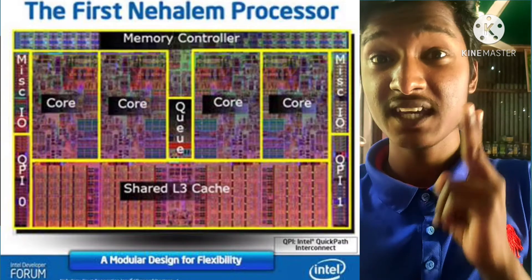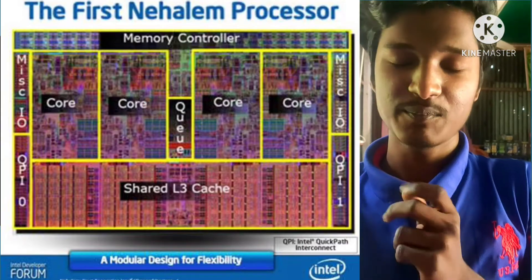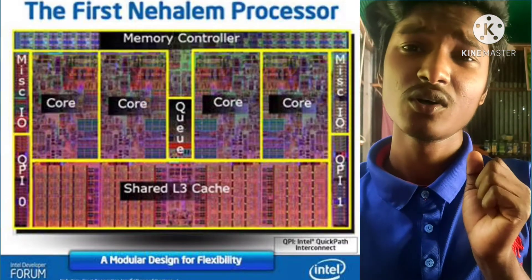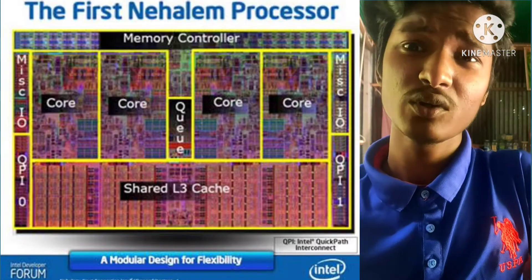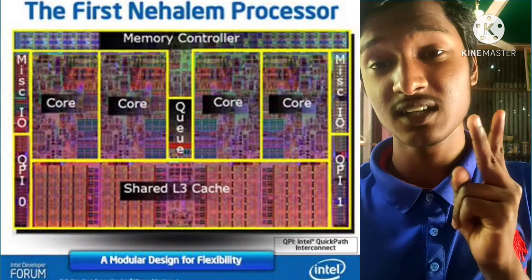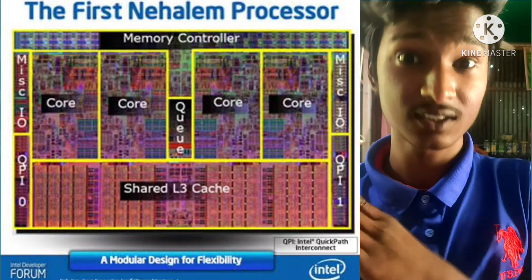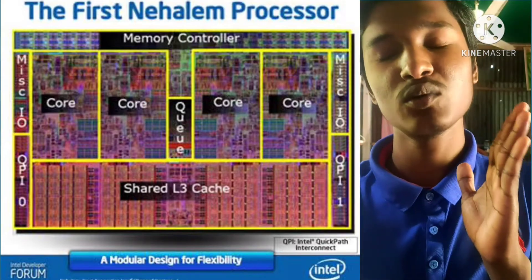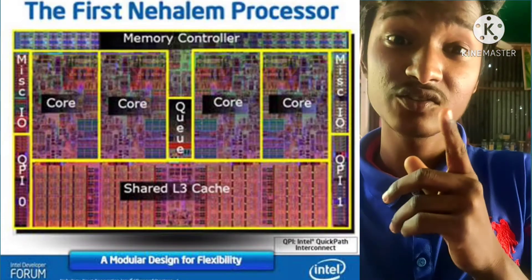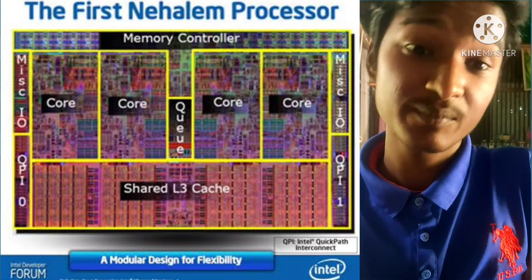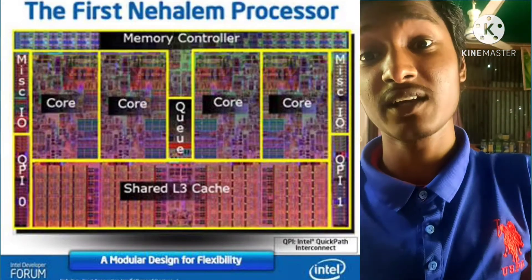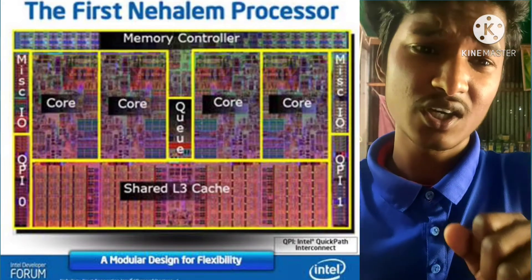For example, a clock speed of 1.5 GHz on one mobile device versus 2.5 GHz on another. Even at 1.5 GHz, the speed is still sufficient for day-to-day use.